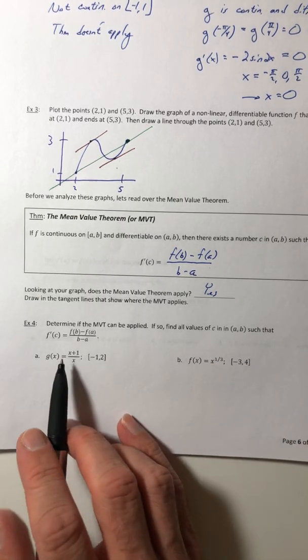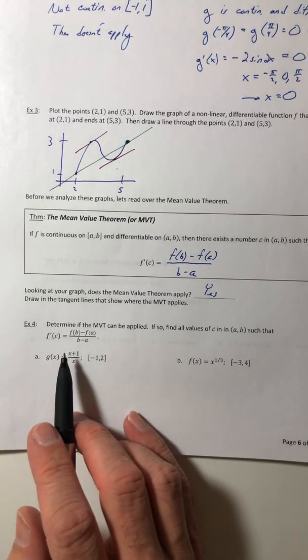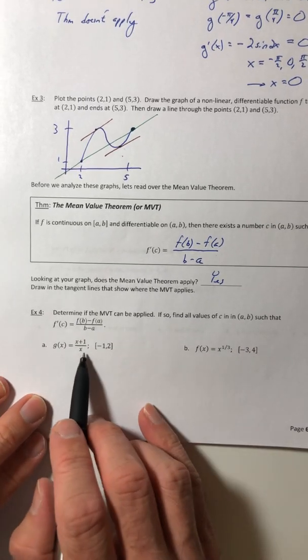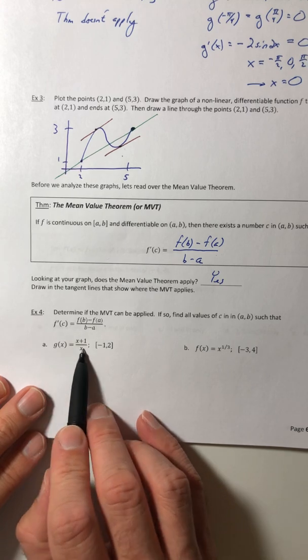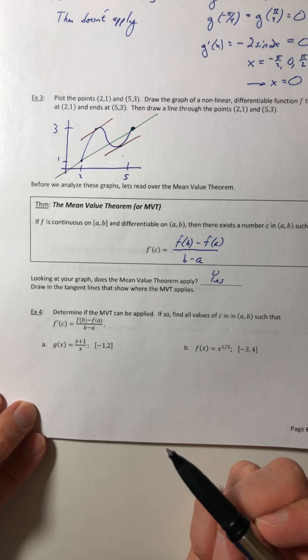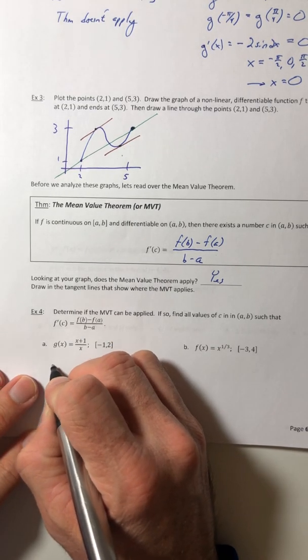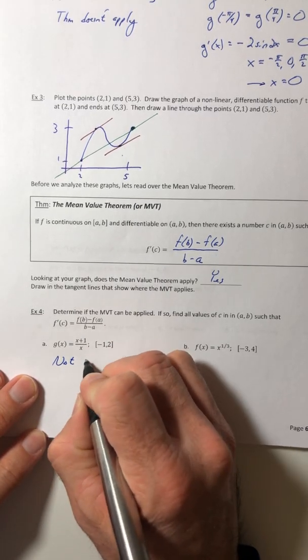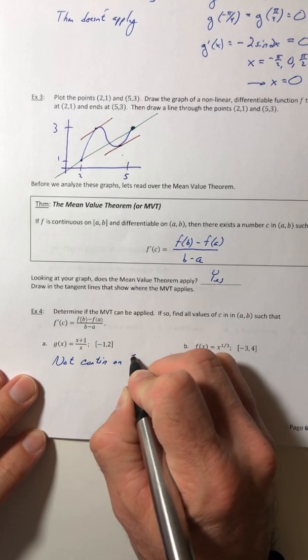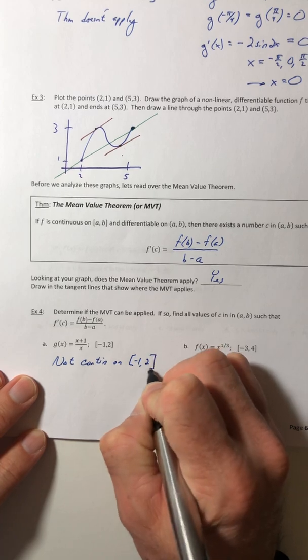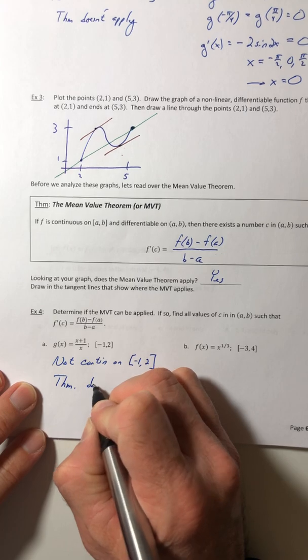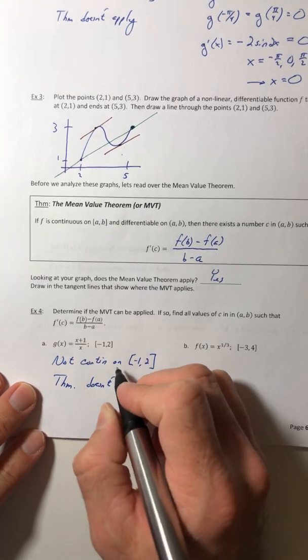Okay, so if we look at it, it's almost like the same thing as Rohl's theorem, it's just we don't have to check f of a equals f of b. Okay, so with this function, is it continuous on this interval? No.